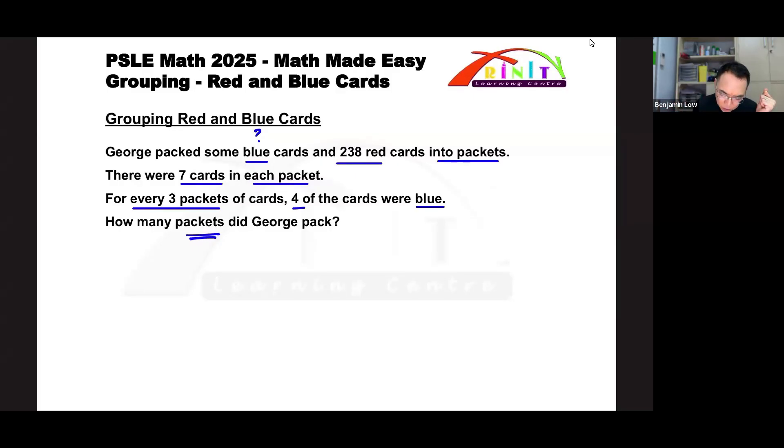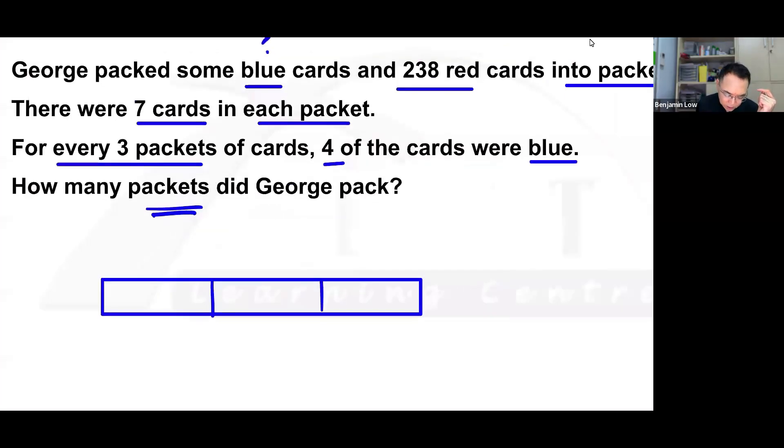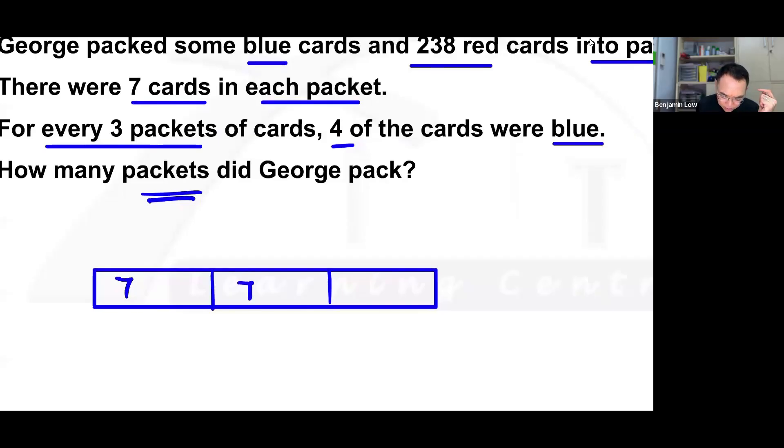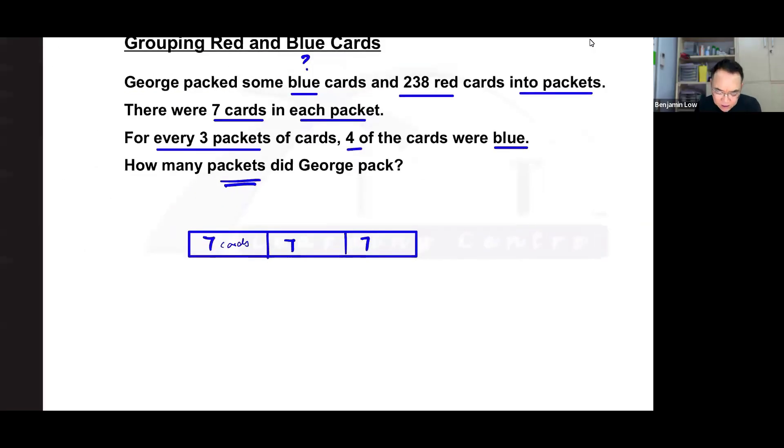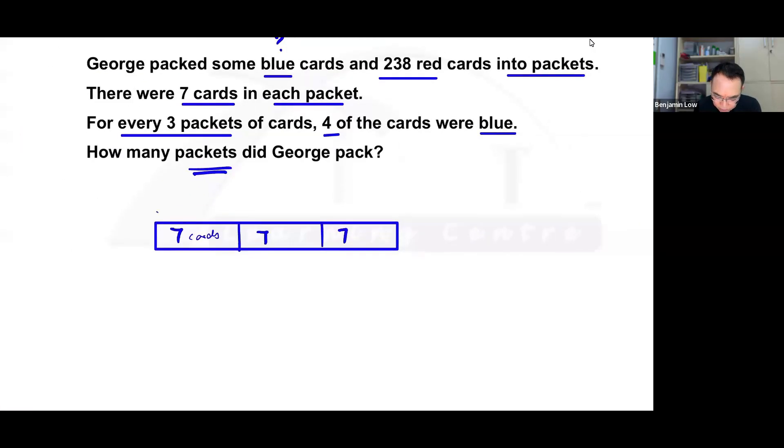Let's now draw a model. This model should be based on 3 packets. Inside these 3 packets, each of the packets contains 7 cards, so that means there are 7, 7, and 7. That means I have a total of how many cards? The answer is 21. There are 21 cards in 3 of the packets.